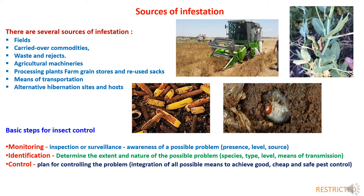There are some basic steps in insect control. In order to control insects in a storage warehouse or processing plant, various steps must be followed. First is monitoring — there should be an inspection or surveillance program to yield prompt awareness of a possible problem such as presence of insect pests before they cause severe damage. Second is identification — to determine the extent and nature of the problem, including species, type of insect, level of infestation, and means of transmission. Third step is control — after monitoring and identification, we must devise a plan integrating all possible means to achieve good, cost-effective, and safe pest control methods.